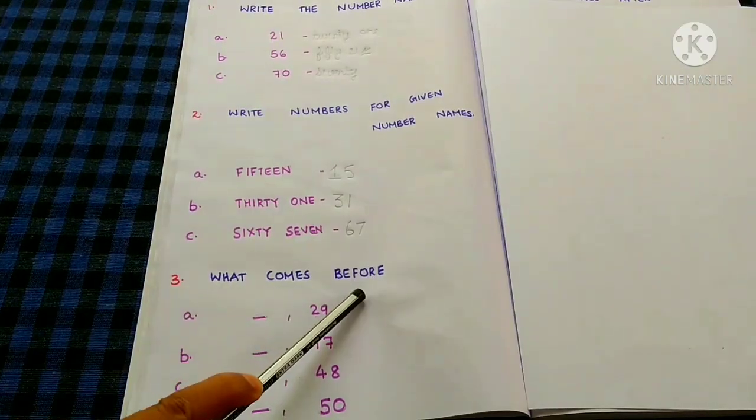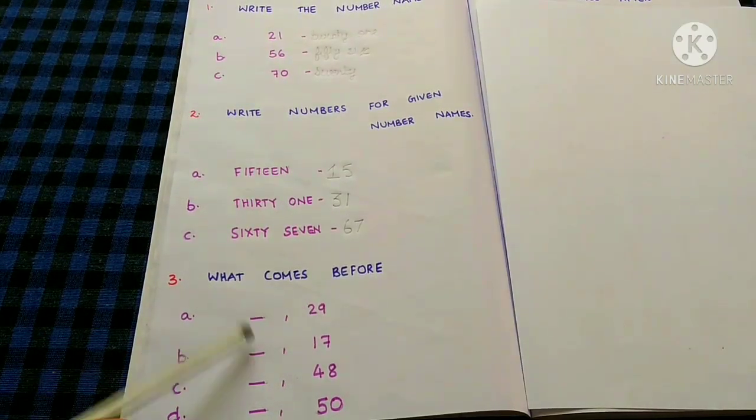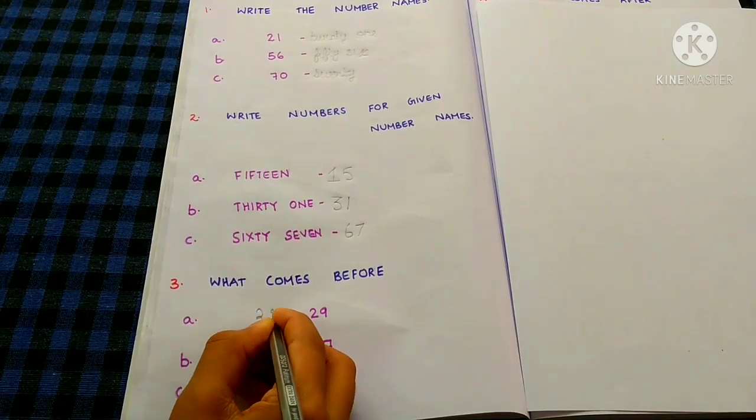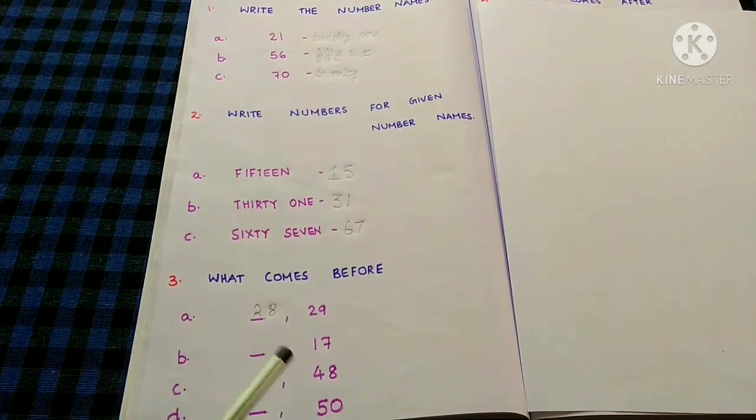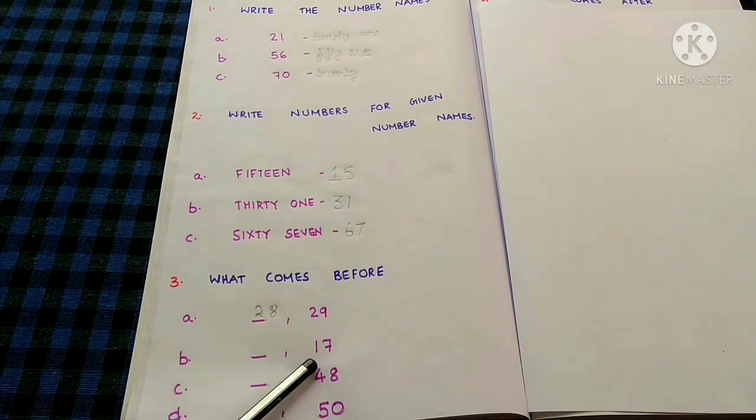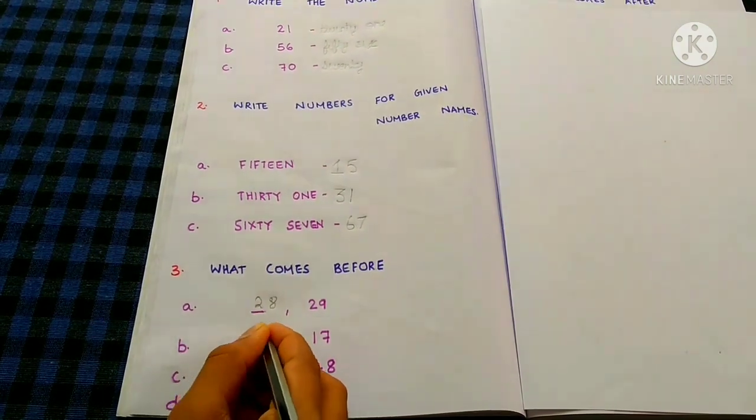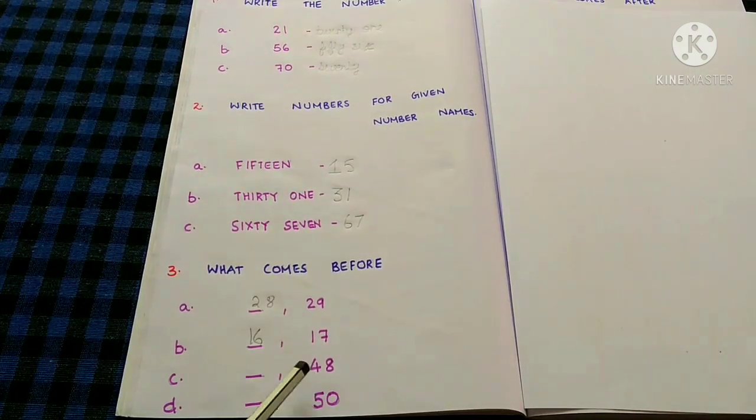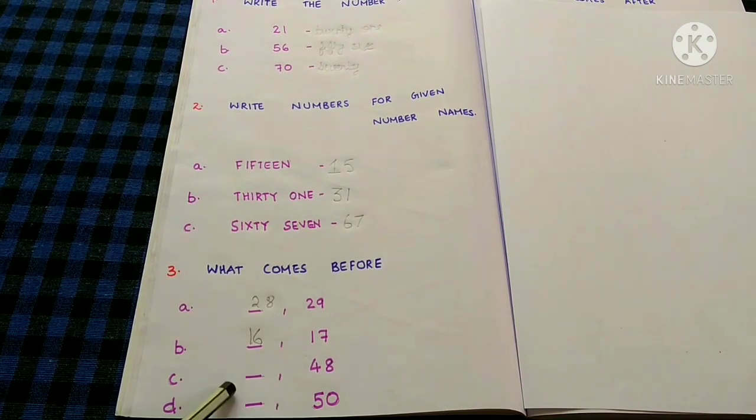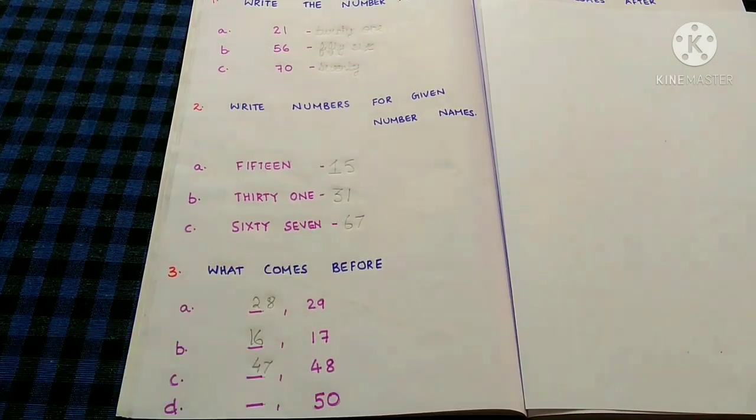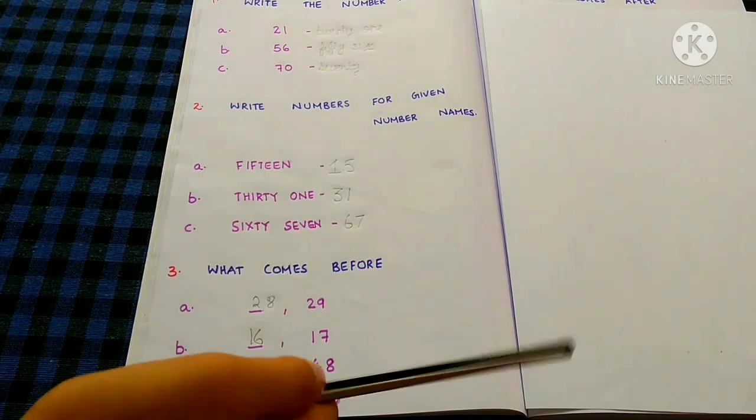What comes before 29? 28. 17? 16. 48? 47. 50? 49.